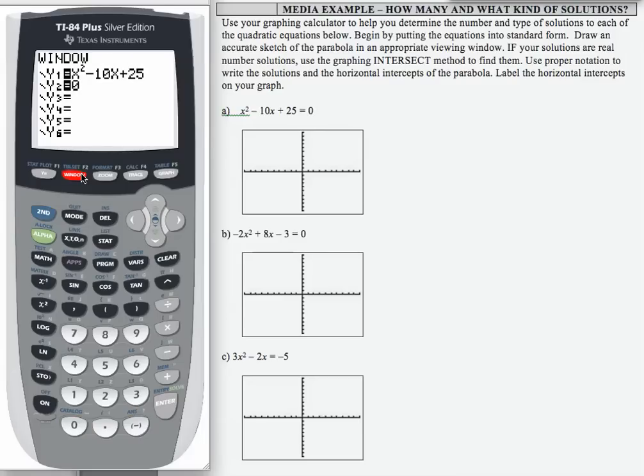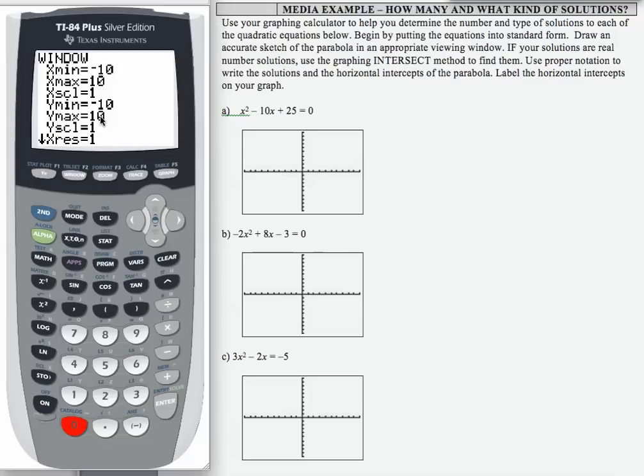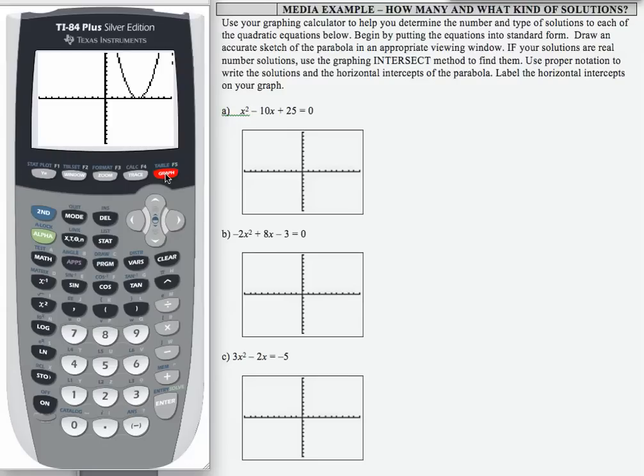I'm going to go to my window, make sure I have a standard window, which I don't. Let me change x max to 10, and y min and y max are both 10. I'm going to graph. And what I want to see is how many places this parabola crosses the horizontal axis. Now in this case, it looks like we're just touching right here. So I'm going to draw a graph of that that's fairly accurate.